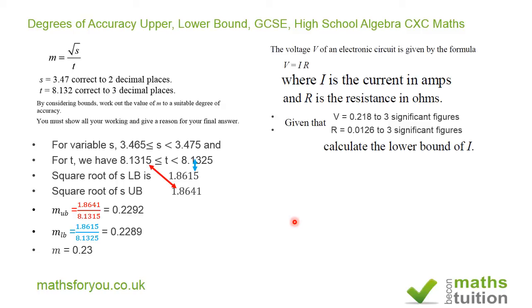And then it says calculate the lower bound of I. Now we need to establish the bounds for V. If we rearrange the formula as I equals V over R, then the lower bound of V is 0.2175 and the upper bound for V is 0.2185.